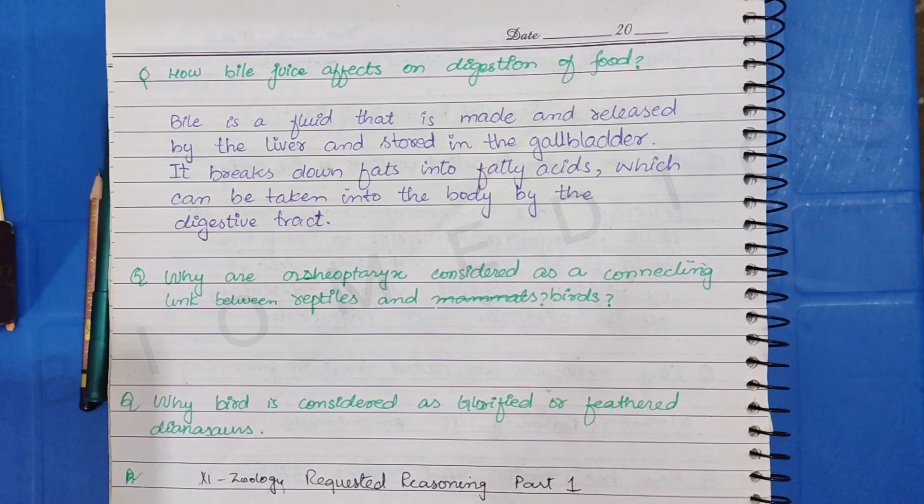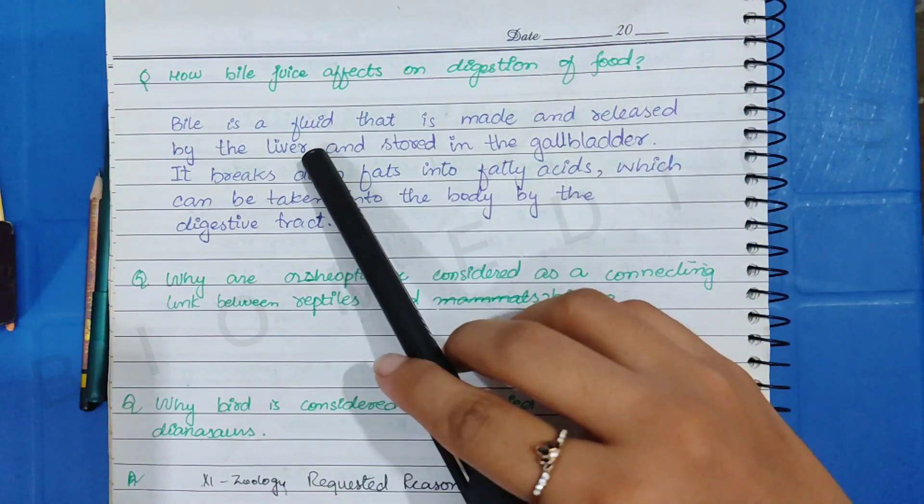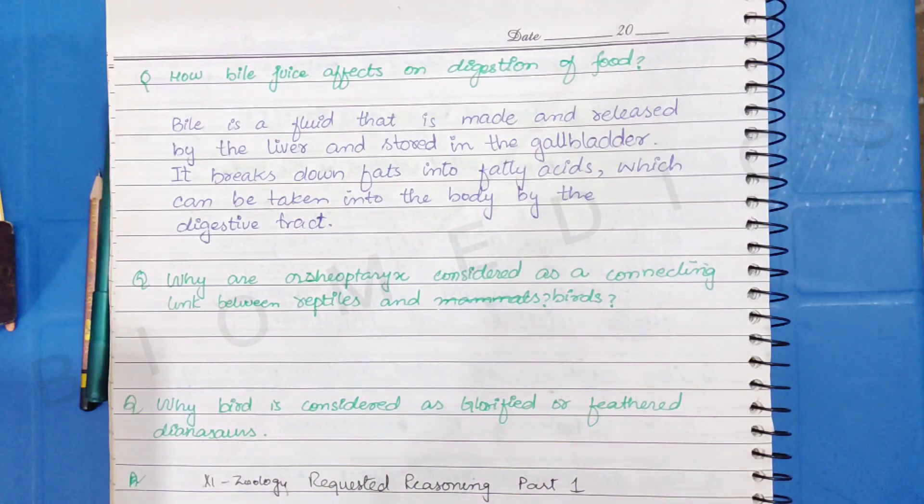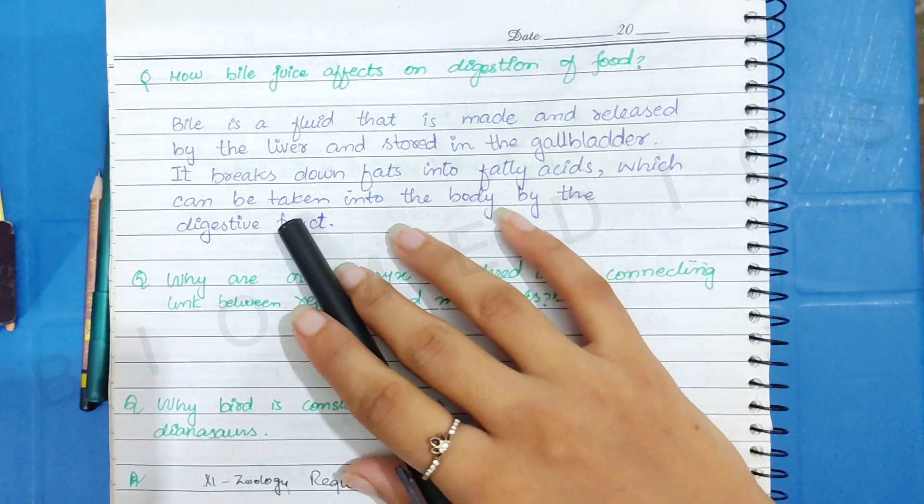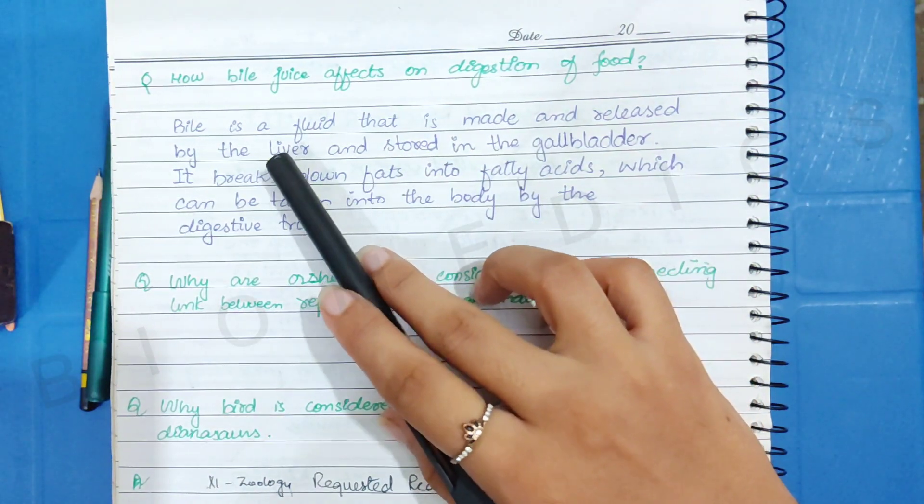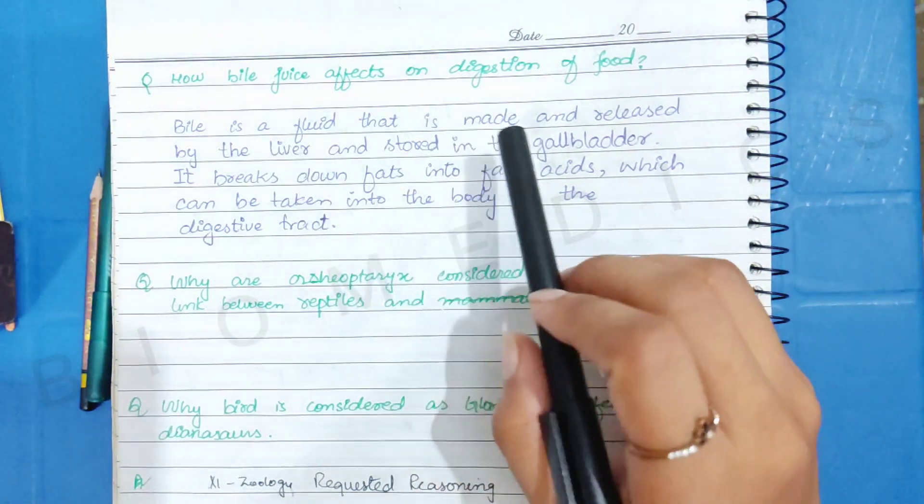Bile juice helps the digestion of food. First of all, what is bile juice? Bile juice is a fluid and liquid which our liver is releasing. It is released from the liver and both are made from your liver, and it is stored in the gallbladder.